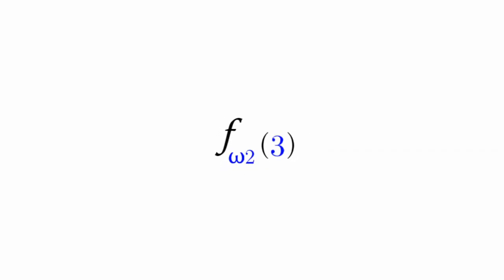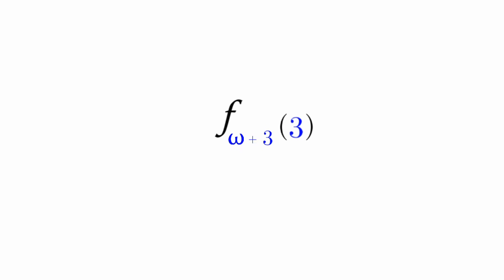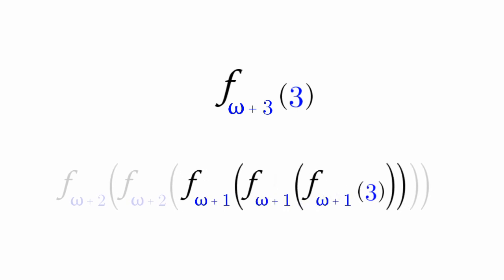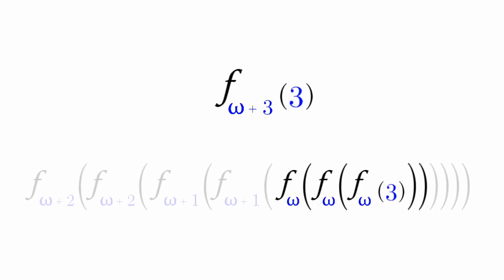Let's have F(omega×2) of 3 as an example. You turn omega times 2 into omega plus omega, then you turn the closest omega into a 3. From here, we can break this down into 3 copies of F(omega+2). F(omega+2) of 3 breaks down into 3 copies of F(omega+1). And F(omega+1) of 3, as we did in our earlier video, breaks down into 3 copies of the F(omega) function — an unimaginable number.